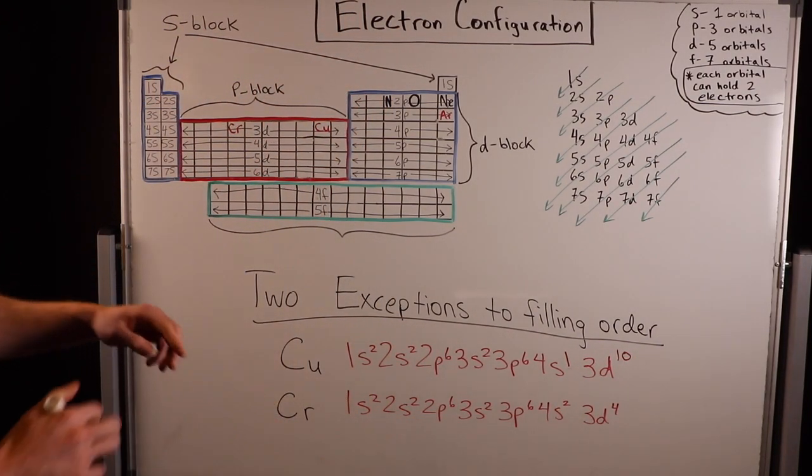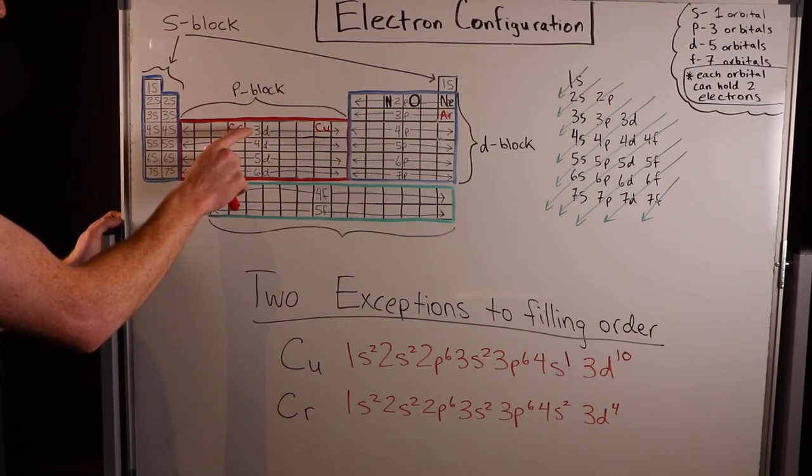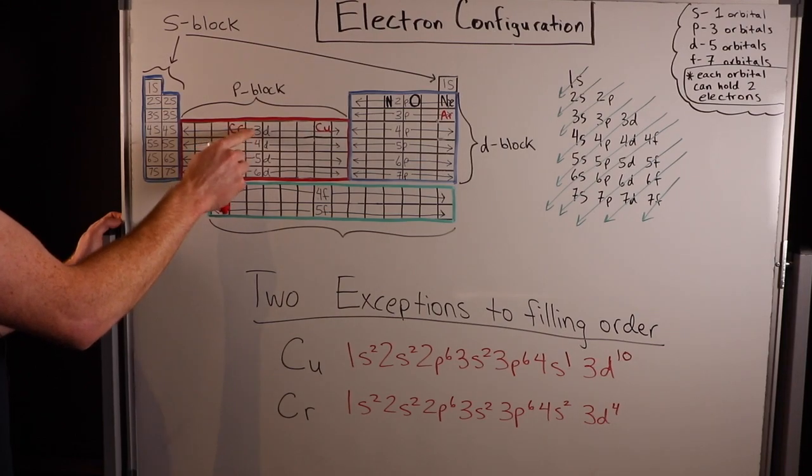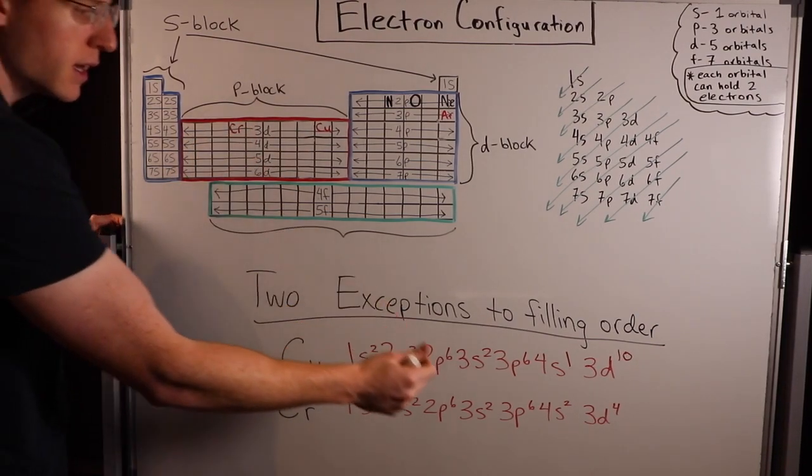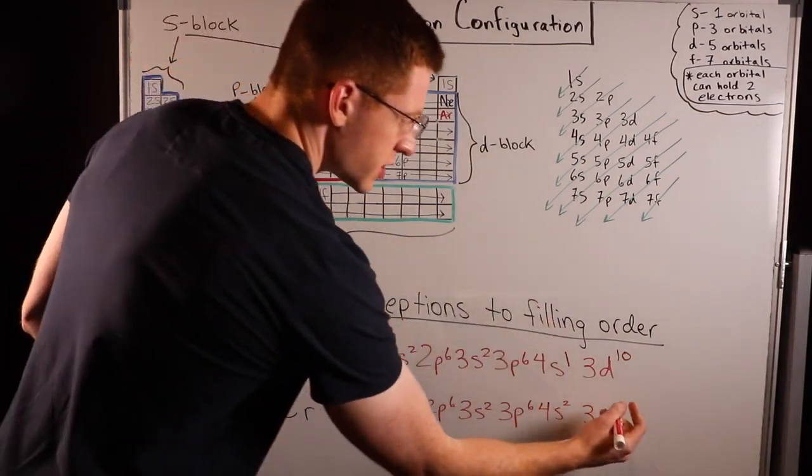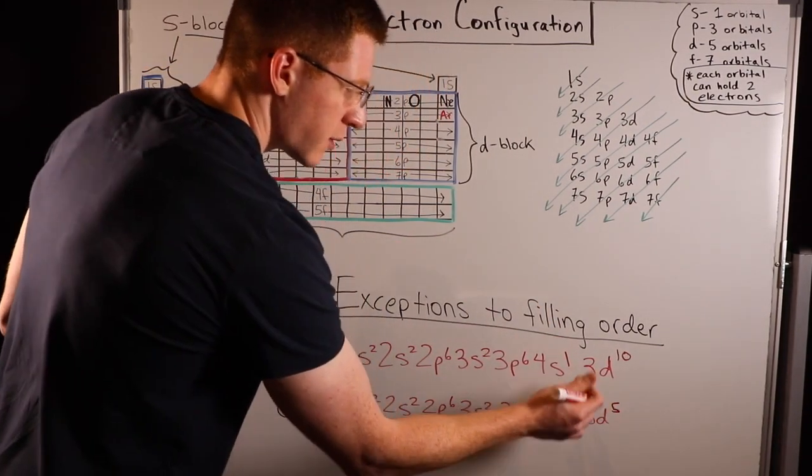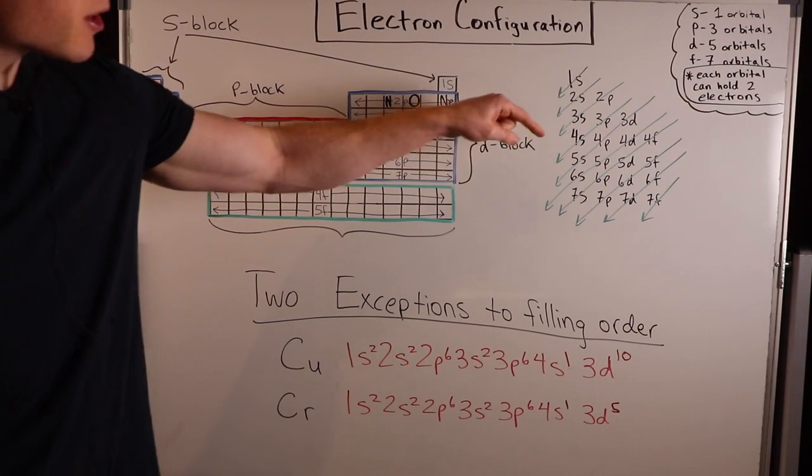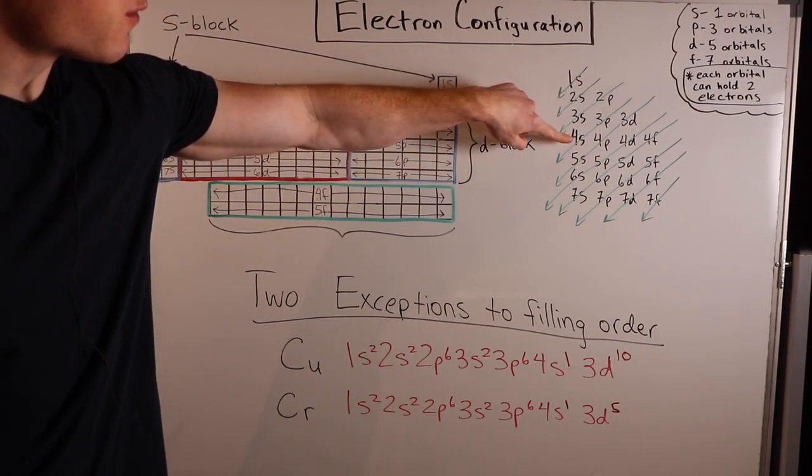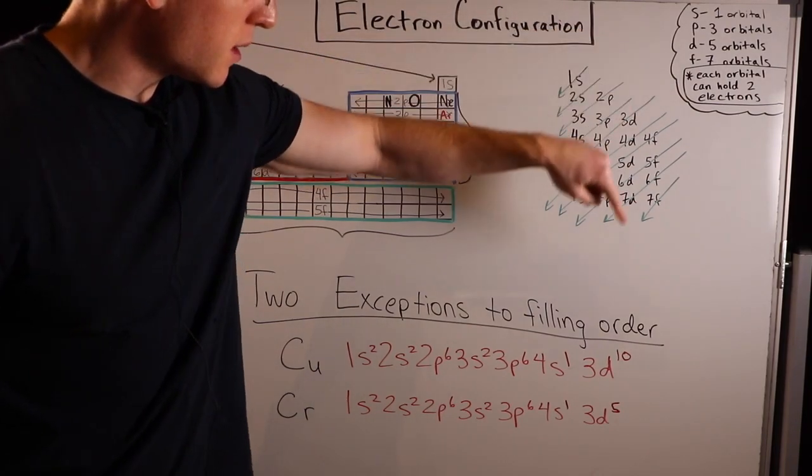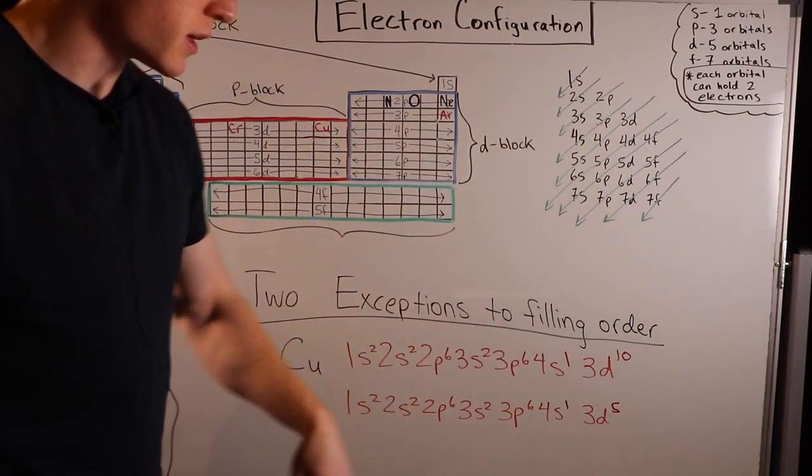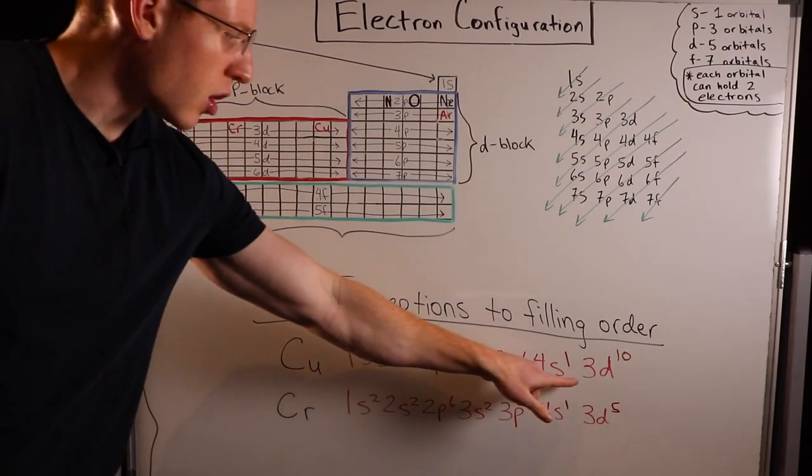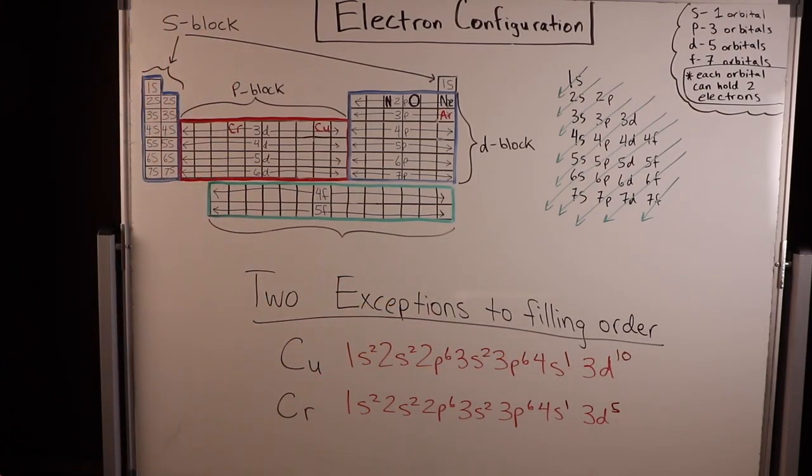Similarly, chromium is one electron away from having a perfectly half-filled 3d orbital. This is half-filled right here. So if it just had one more to make 3d5, it becomes more stable. So it's going to steal one, just like we did up there, from the 4s, making it 4s1, 3d5. See how that's an exception? Normally, we would fill our 4s completely before moving on to 3d. But here, we only put one electron in our 4s, and then we fill our 3d.